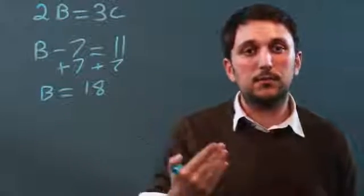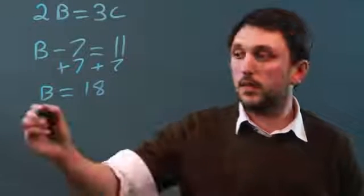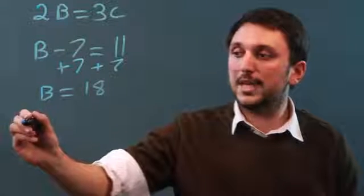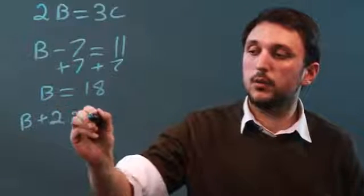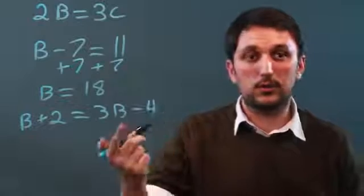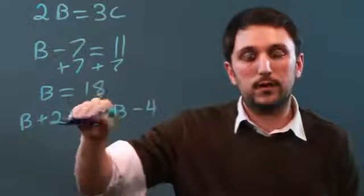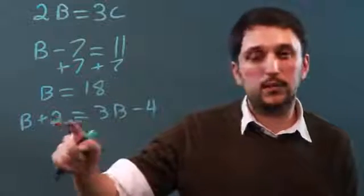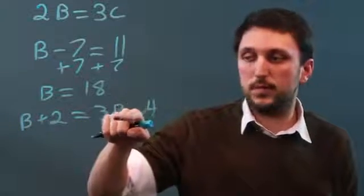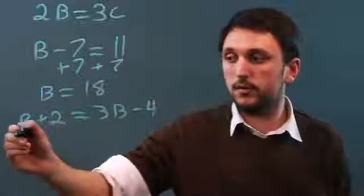Now, sometimes it looks like it'll be hard to find the value of a letter, but it's just the same. Let's say we have B plus 2 equals 3B minus 4. Well, the same rule applies. We put all the numbers on one side, we put all the variables on the other. Now what I like to do is I like to bring small over to big and negative over to positive when I can.